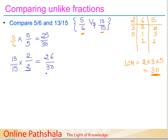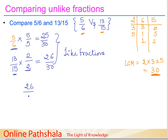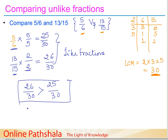We have now converted both original fractions into equivalent fractions with the same denominator — they are now like fractions. Because of this, comparison is very easy. We know that 26 parts out of 30 is definitely greater than 25 parts out of 30. This is how we use the LCM to compare unlike fractions with different numerators.